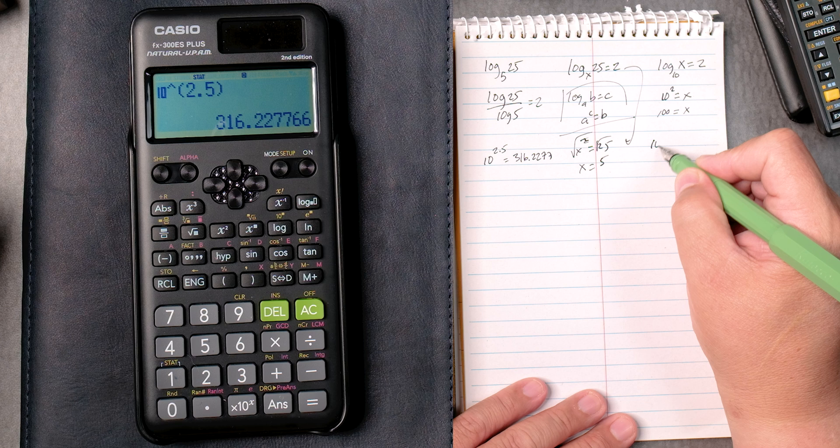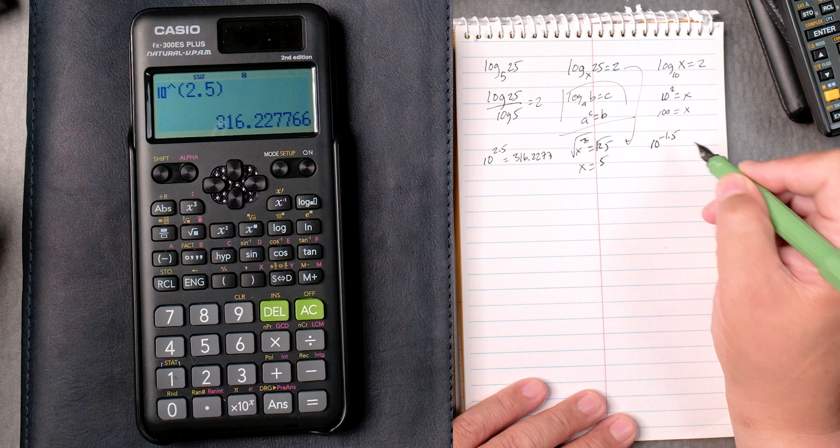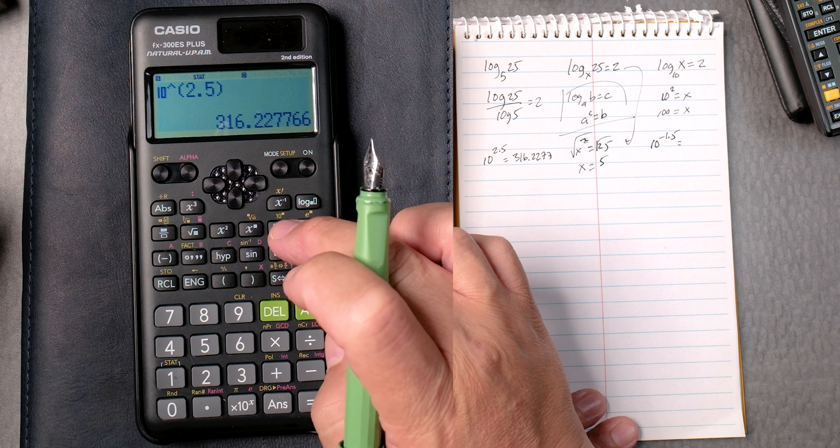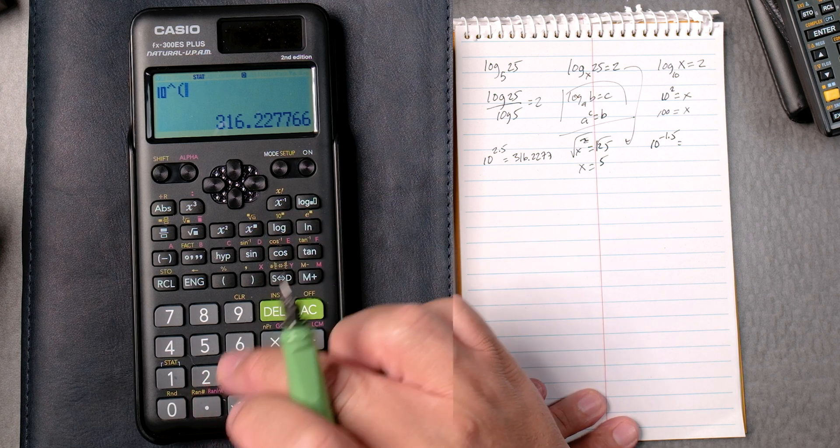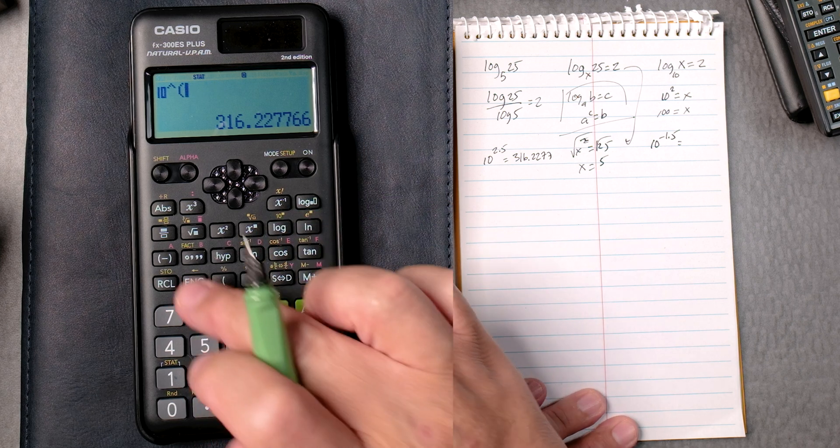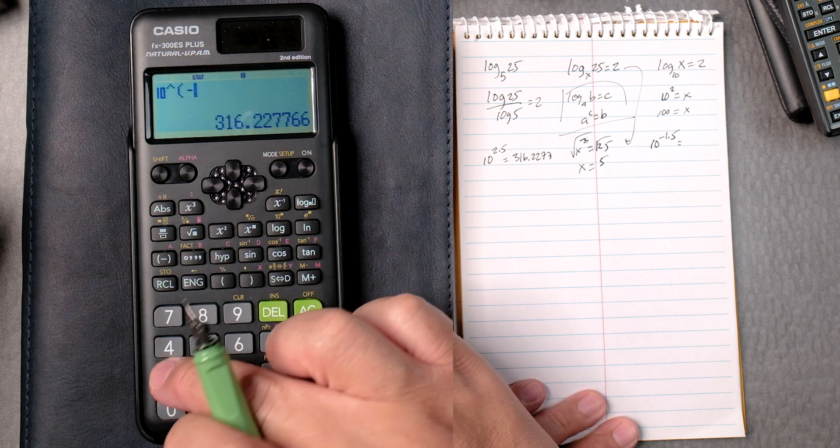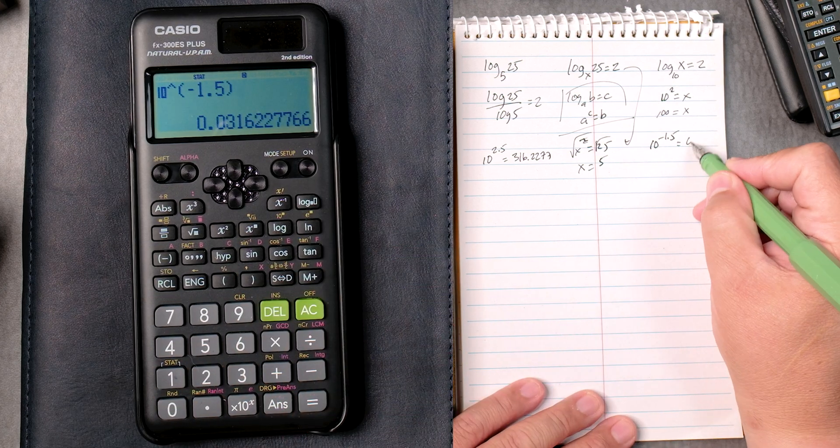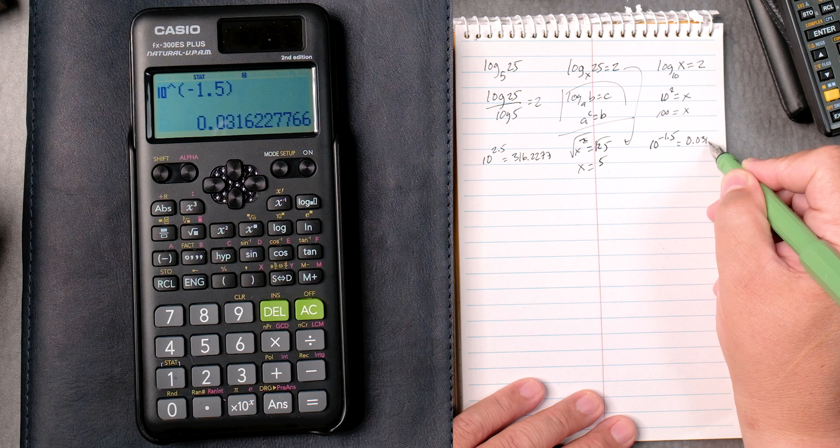Let's say 10 to the minus 1.5. Same thing. Shift, the log key, negative. This negative here, 1.5. Close it. Equals 0.031622.